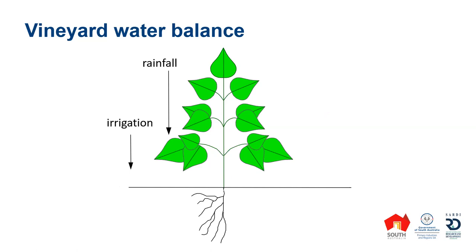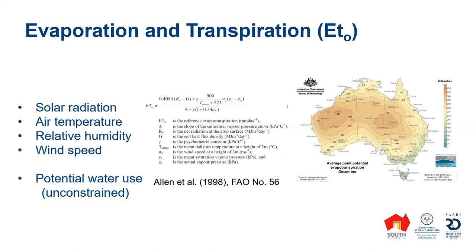So how do we do this? We start off by modelling the vineyard evaporation and transpiration. We have a nice word for this: evapotranspiration, or summarised to ETO. There's a big long equation that hides in the background of the spreadsheet — it's all done with the numbers we're using. What drives evapotranspiration? It's the solar radiation, the amount of sun, the air temperature, the relative humidity — the moisture demand from the atmosphere — and the wind speed.